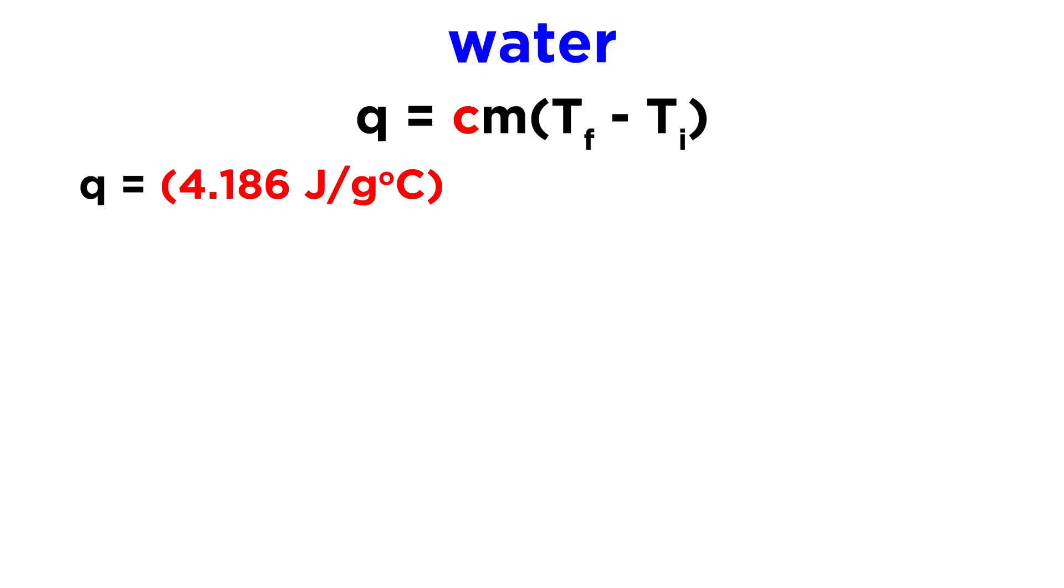So plugging things in, Q is going to be equal to the specific heat of water, which is 4.186 joules per gram degree Celsius, and that's a tabulated value we would just get out of the textbook or online. Times the mass of the water, and we had 60 milliliters of water, and water is 1 gram per milliliter, so 60 milliliters is the same thing as 60 grams, so we can just call that 60 grams of water.